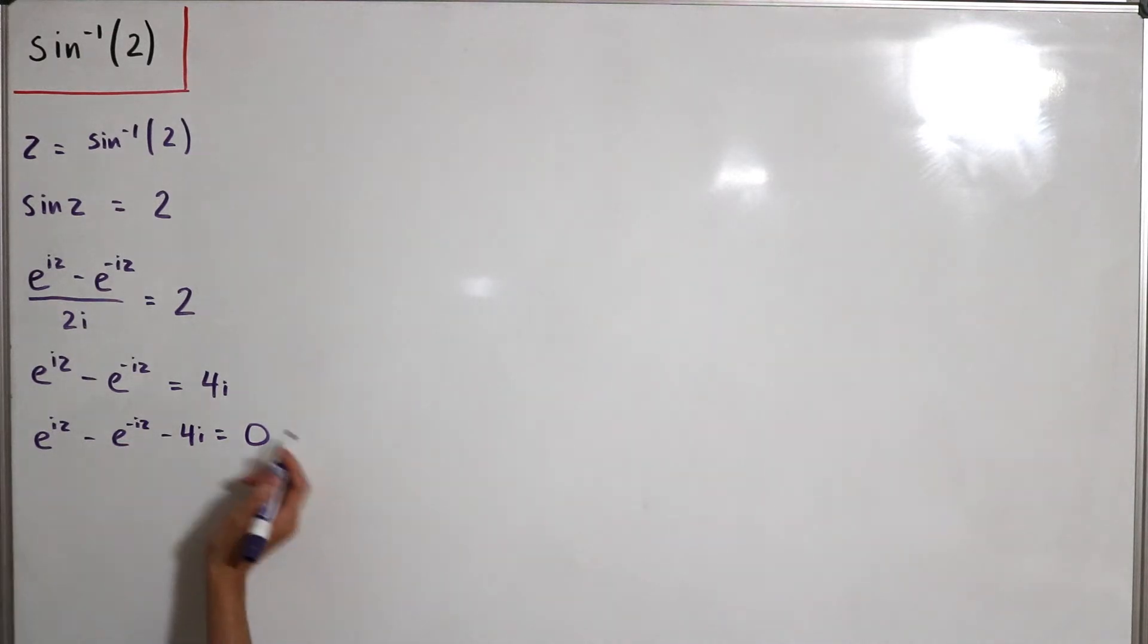Then I can actually multiply e to the iz to both sides of the equation. And then from here we can actually get in similar fashion a quadratic polynomial. So this will be e to the 2iz minus 4i times e to the iz then minus 1 equals 0.